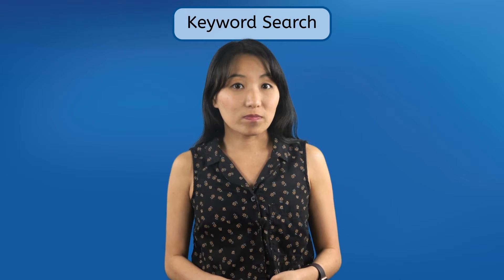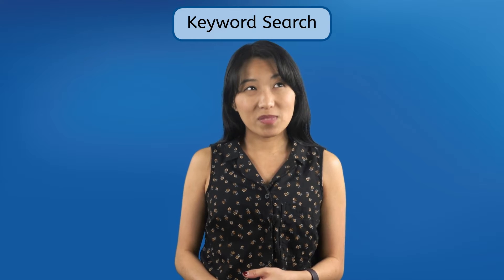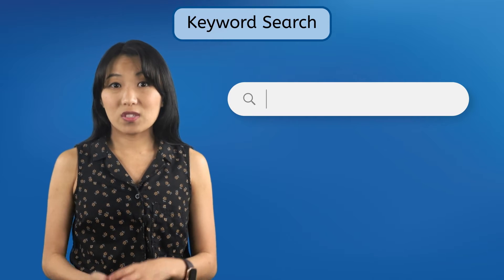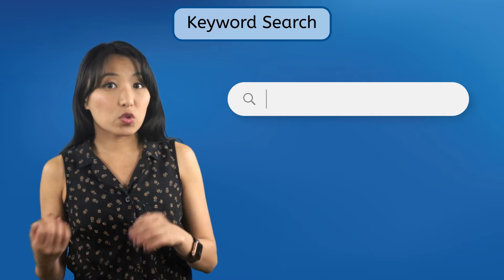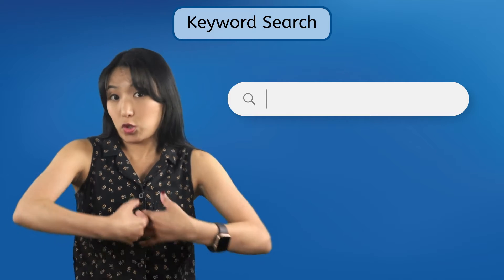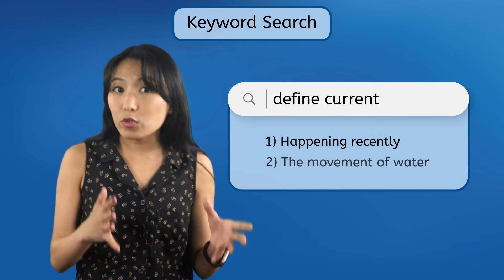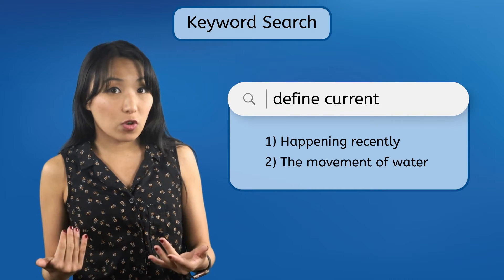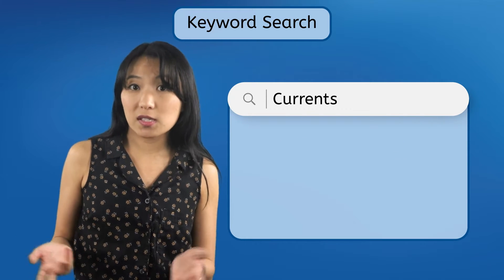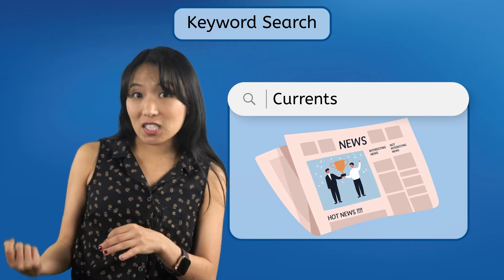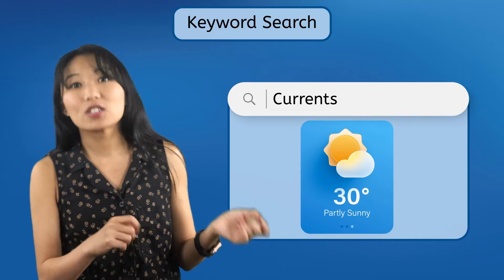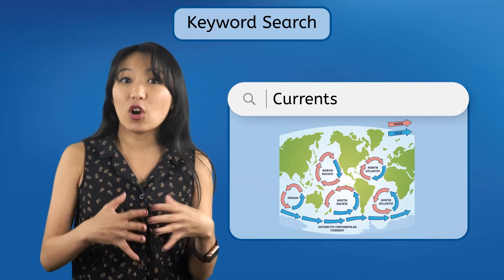When searching for information, most people start with a keyword search — a basic search that returns any results containing the words you searched for. But keyword searches tend to have some problems. First, some words are used in multiple ways and in multiple contexts, and information retrieval systems aren't typically sophisticated enough to tell which version you mean, so they'll just show you everything. Like the word "current," which can mean happening recently, or the movement of water. If you want to find out how ocean currents form, you could try searching for "currents," but you might have to scroll through a bunch of current event news articles and current weather forecasts before you find any information on ocean currents.